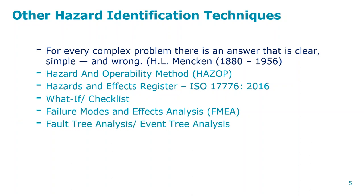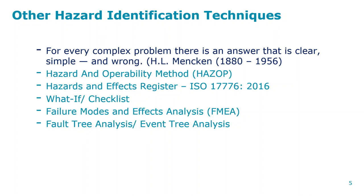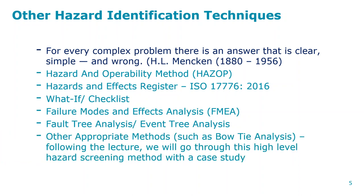Fault tree analysis is another method where you look at a fault — for example, if my car didn't start this morning, I look at why: there was no petrol, or the battery was flat. You ask further questions down the line until you come to the root cause. It's sometimes called the five whys investigation technique. These are other appropriate methods, and bowtie is what we'll be talking about.